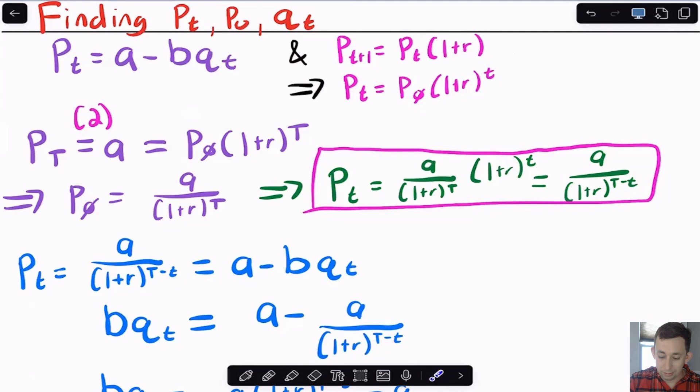We also know that in the last period, P cap T, that our price is exactly equal to A. And so A must be equal to P0 times one plus R to the cap T. And I'm just going to resolve that for P0 and I'm going to plug that back into PT. And so this is going to be my equation for PT right here, where it's just going to be A over one plus R to the cap T minus T, where again, now it's just based on how close we are to the last period.